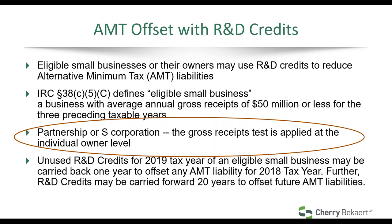Eligible small businesses — defined in Section 38(c)(5) as businesses with average annual gross receipts of $50 million or less for the three preceding taxable years — may also use R&D credits to reduce alternative minimum tax liabilities. For partnerships or S corporations, the gross receipts test is applied at the individual owner level. Unused R&D credits for the 2019 tax year of an eligible small business may be carried back one year to offset 2018 AMT liability, and can be carried forward 20 years to offset future AMT liabilities.